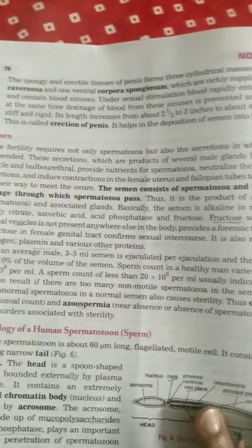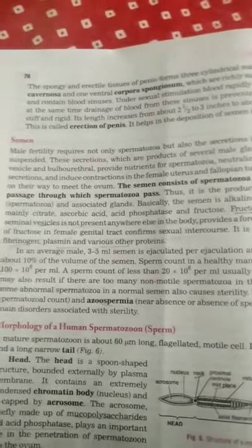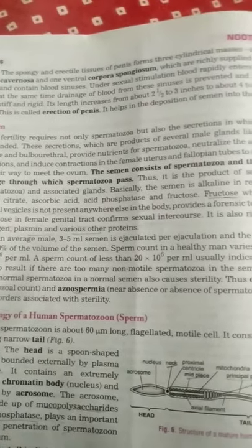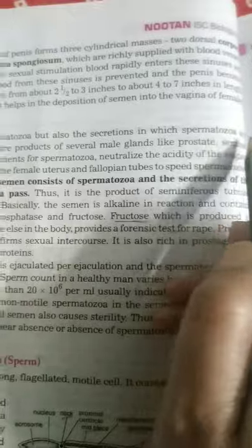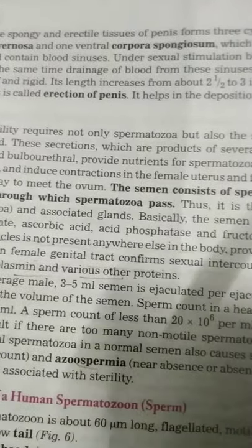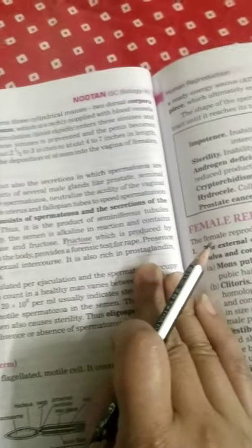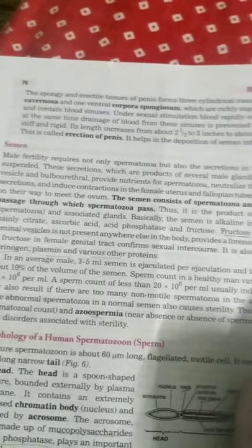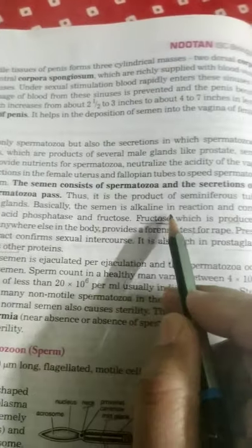Semen is the secretion collected from all three glands along with the sperms. Male fertility requires not only the spermatozoa but also the secretion in which the spermatozoa are suspended. The semen consists of spermatozoa and the secretions of all the passages through which the spermatozoa pass. Importantly, semen is alkaline in nature.